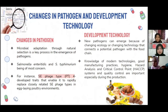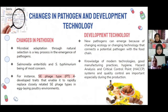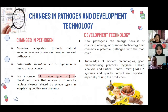For instance, Salmonella enteritidis phage type 4, which caused an outbreak in Southern California, developed a trait that enabled it to rapidly replace closely related Salmonella enteritidis phage types in egg-laying poultry environments.